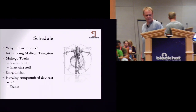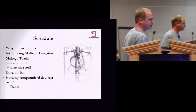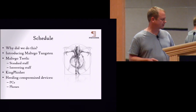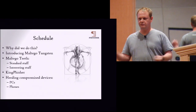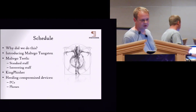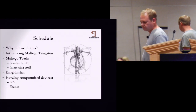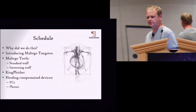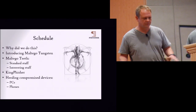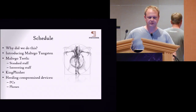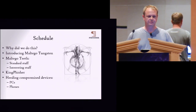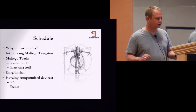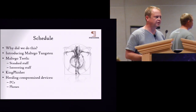We've got a lot of stuff. I'm going to start off by explaining why we did what we did, then we're going to look at Maltego Tungsten, which went live on stage about two minutes ago. Then we'll look at something I call Maltego Teeth — giving teeth to Maltego. Then Andrew is going to take over and show you Kingfisher, and if we have time we'll look at herding compromised devices, which might be machines or mobile devices.